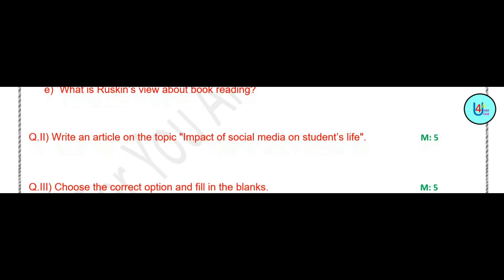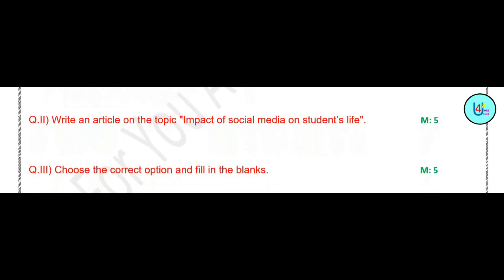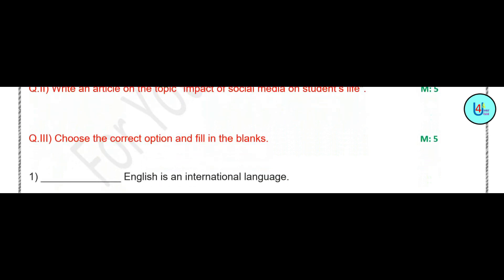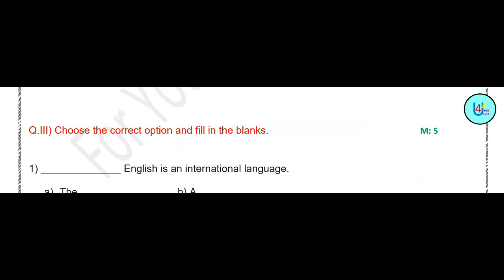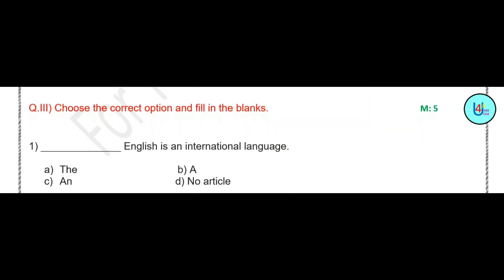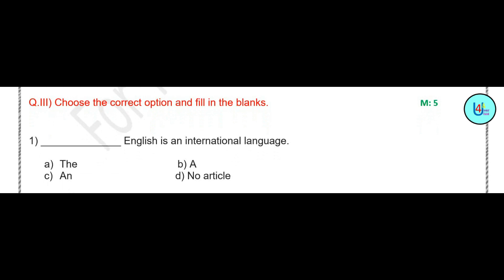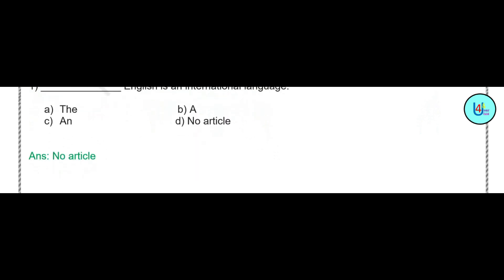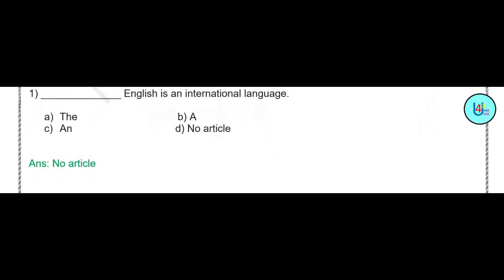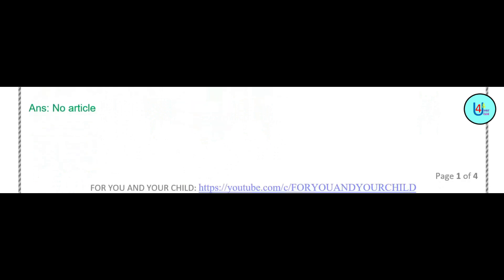The next question is: choose the correct option and fill in the blank. 'Dash English is an international language.' The options are: D, A, and no article. The correct answer is no article — in English, there is no need to put any article before the word 'English.'